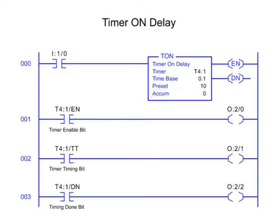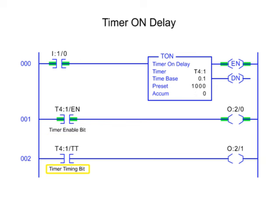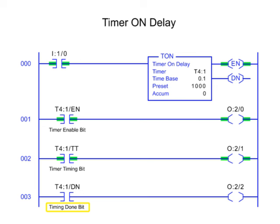For timer instructions, three control bits are available for programming use. Timer enable bit status is true when the timer instruction is true. Timer timing bit status is true when the timer is timing and the accumulated value is changing. Timer done bit status is true when the accumulated value meets the preset value.